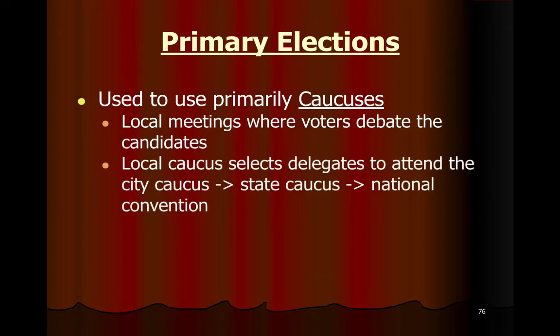They would keep doing this — sending people from the city caucus to the state caucus, and then there would be representatives from each state who would attend the national convention. Some states still use this method. Iowa is known for having the first of the caucuses in the presidential election cycle, and some states use a variety of methods, including both caucus and a ballot.